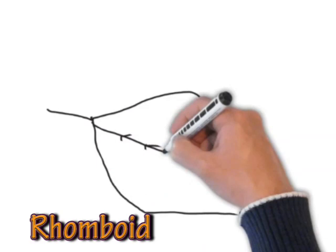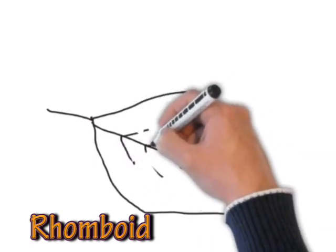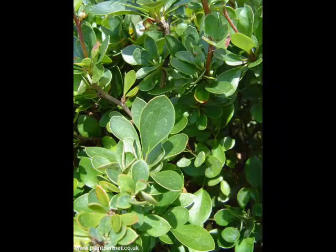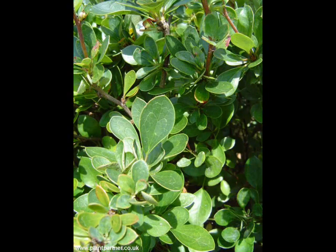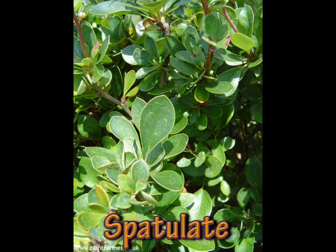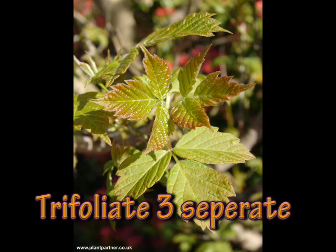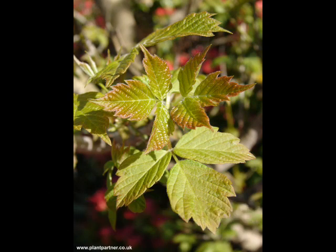There's a rhomboid one. There you have your spatulate one. And we have trifoliate like Choisya — 'ternata' actually means leaves in threes. And there you have an Acer as well, like an Acer negundo leaf.